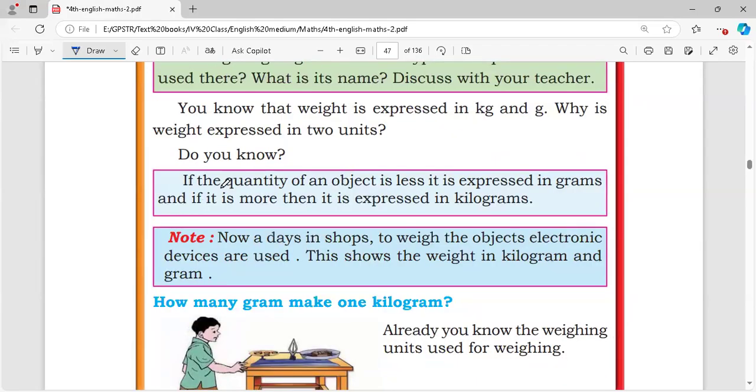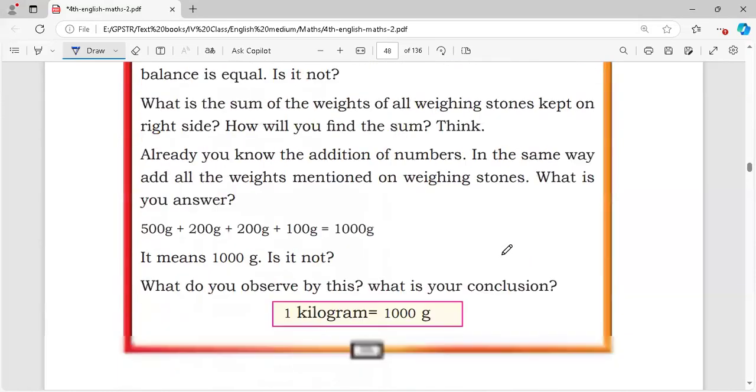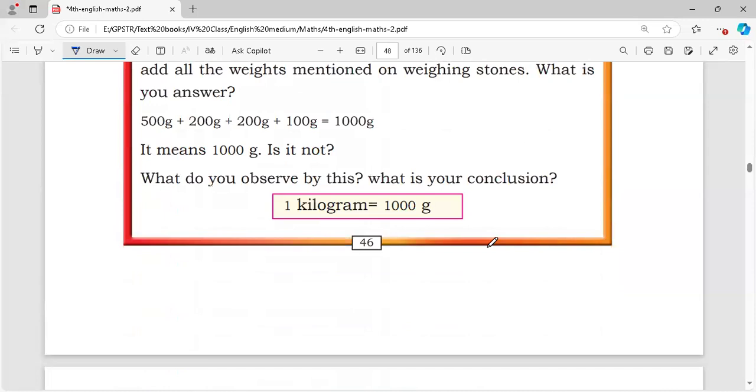If the quantity of an object is less, it is expressed in grams. If it is more, it is expressed in kilograms. One kilogram is equal to 1000 grams.